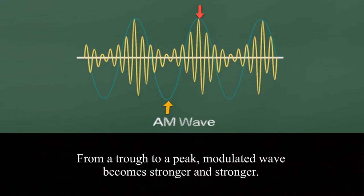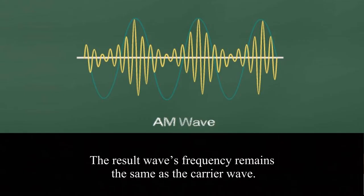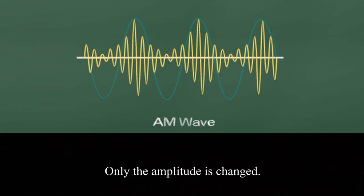From a trough to a peak, modulated wave becomes stronger and stronger. The result wave's frequency is the same as the carrier wave. Only the amplitude is changed.